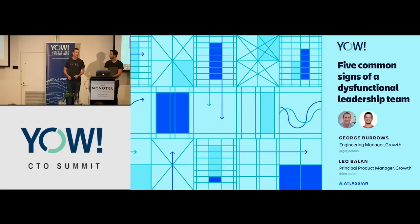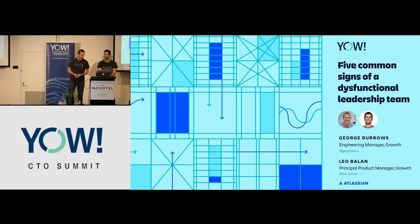No matter what level of leadership you're at — you might be a CTO, you might be a team lead, you might be in different size companies — you don't work in isolation. You have to form strong connections with other leaders to form an effective leadership team. Me and Leo have got a combined 20 years experience in leadership, and for the last four years we've worked in a leadership team at Atlassian that we typically call a triad.